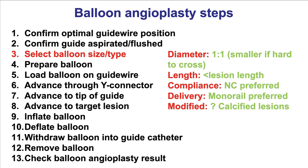The third step is to select the balloon size and type. In general, the balloon should be sized 1-to-1 to the target vessel, but can be smaller if it is difficult to advance across the lesion. The length should be less than the lesion length to avoid injuring additional vessel length that will subsequently require longer stent implantation. Non-compliant balloons are preferred because they can also be used for post-dilation. Also, a monorail system is preferred to over-the-wire — it is much easier to advance. Plaque modification balloons may be advantageous in heavily calcified lesions.